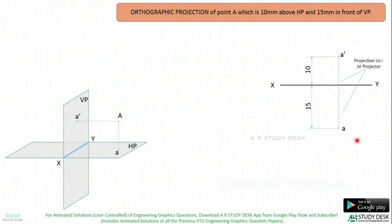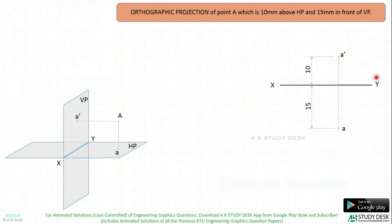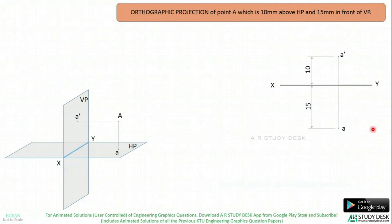These two lines are called the projection line or projector. The dark point A and dark point a-dash are called projections. This line is called the extension line and this is the dimension line. Thank you for watching. Happy learning.